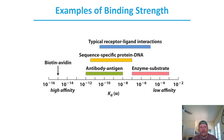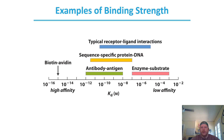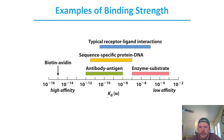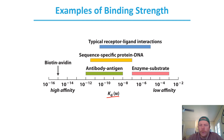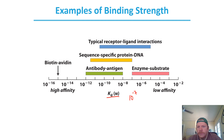When thinking about binding strength in the context of enzyme-substrate interactions, we can use the dissociation constant and its magnitude to think about what concentration range is considered normal for an enzyme-substrate interaction. That range is going to be anywhere from 10 to the minus seventh molarity to 10 to the minus third molarity.